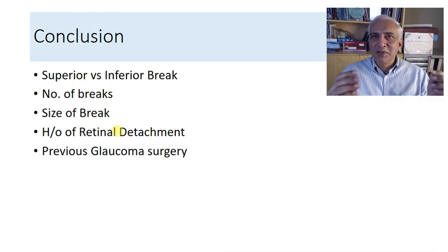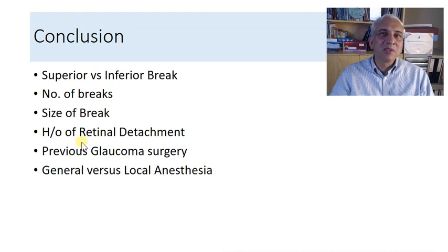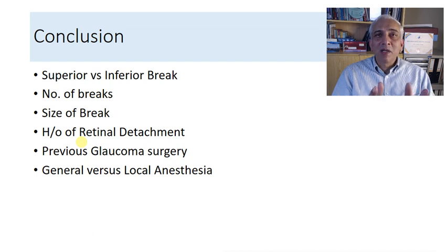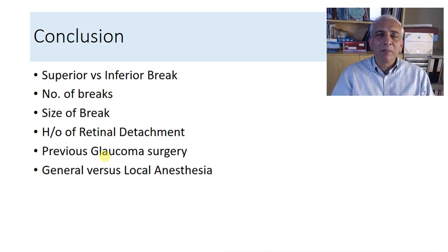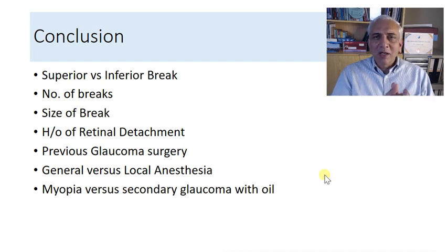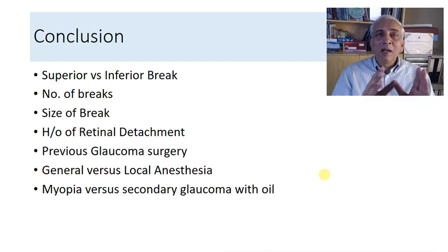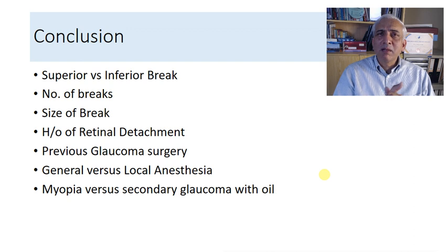Previous glaucoma surgery makes cases very challenging — if a patient has an Ahmed glaucoma valve or trabeculectomy, those filtering blebs are at risk, making vitrectomy the only viable choice. Regarding anesthesia: both buckling and vitrectomy can be done under general anesthesia, but vitrectomy works very well under sedation with local anesthesia. Buckling under local anesthesia can be cumbersome due to bradycardia and patient pain. With vitrectomy using silicone oil, emulsification can cause glaucoma; with buckling, a 360-degree buckle causes more myopia, and a segmental buckle or sponge can cause astigmatism.